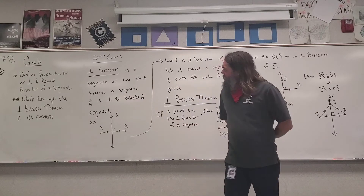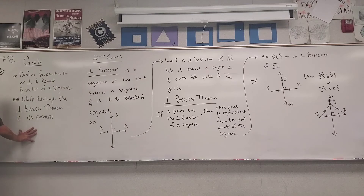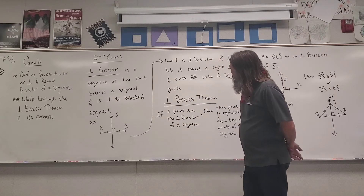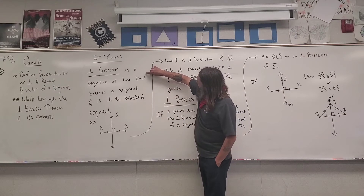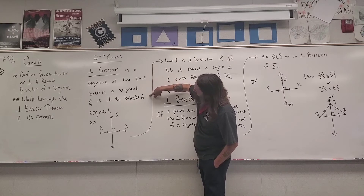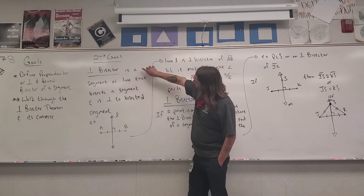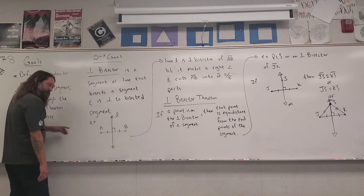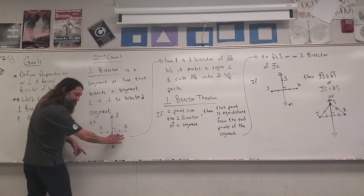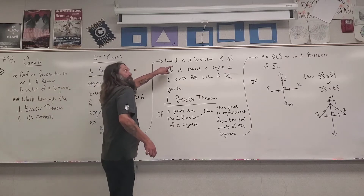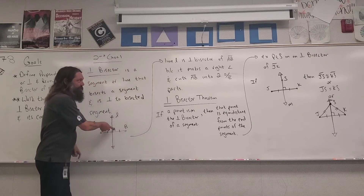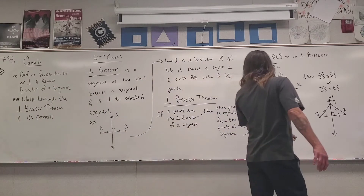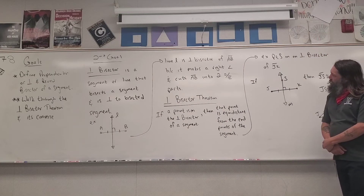Let's jump into our second goal and walk through the perpendicular bisector theorem and its converse. First, a perpendicular bisector is a segment or line that bisects a segment and is perpendicular to the bisected segment. To translate: it cuts a segment in half and makes a right angle. In the example picture, line L is a perpendicular bisector of segment AB because it makes a right angle and cuts AB into two equal, congruent parts.